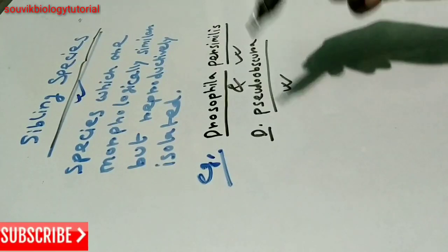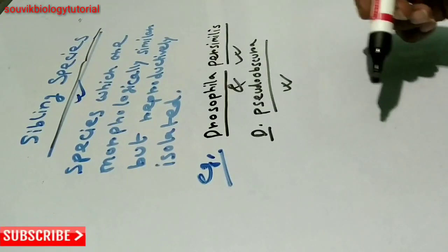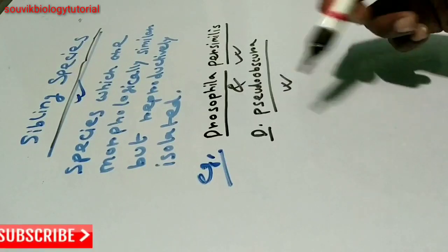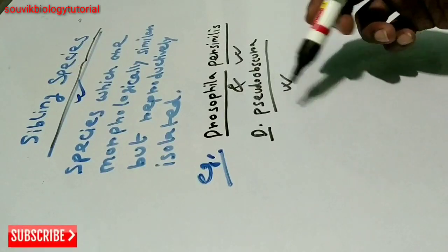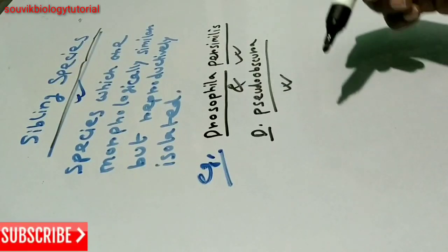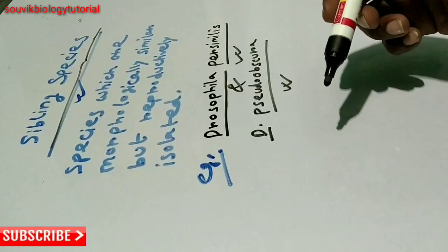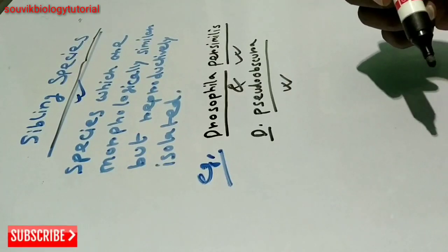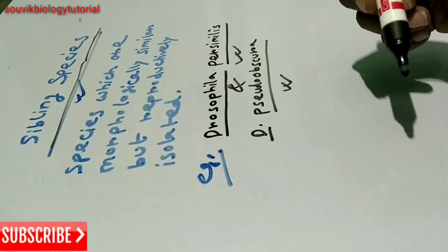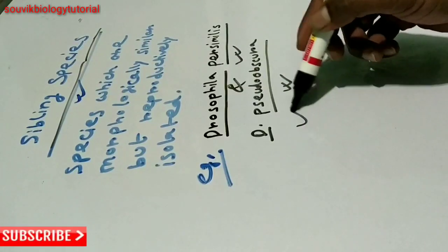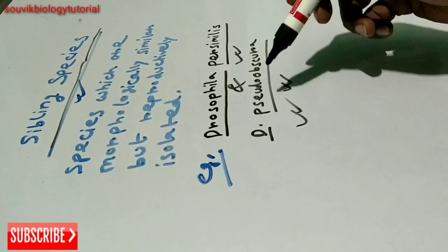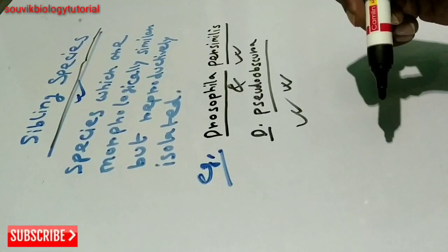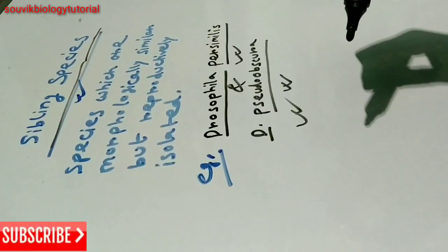For example, Drosophila persimilis and Drosophila pseudoobscura — although they are structurally similar, they are reproductively isolated, so these are the examples of sibling species. Thank you very much.